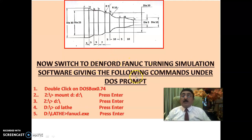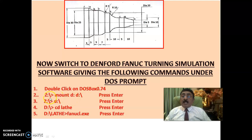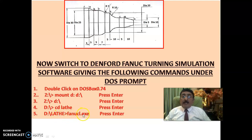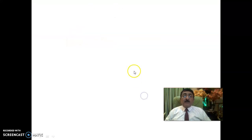To launch the software, double-click DOSBox 0.74, then enter the following commands: mount D: D:\ and press Enter, then D:\ then CD LATHE, and then FANOOK_L_LATHE.EXE and press Enter. Following these steps brings you into the Fanuc turning simulation software.